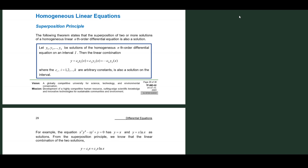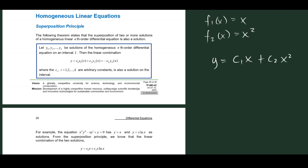Before tackling the superposition principle, it's important to know what a linear combination is — a linear combination of functions. So let's say we have two functions: f1(x) = x, and f2(x) = x². The linear combination of these two functions is y = c1·x + c2·x², where c1 and c2 are arbitrary constants.